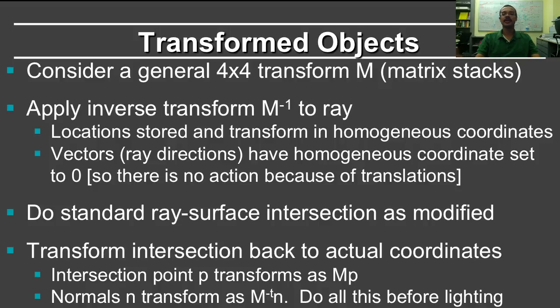So first you apply M⁻¹ to the ray, do the intersection, and then to the point you apply MP. And normals you know transform differently. So you use M⁻¹ transpose times n. We talked about that in normal transforms. Once you found the point and normal in world coordinates, you can do your standard lighting calculation.